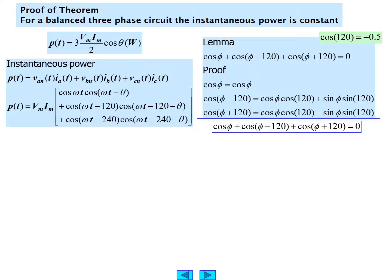For instantaneous power, we know it's the product of voltage and current, so we can make a substitution now for what that represents. The amplitudes V_m I_m can be factored out, and we end up with this three-term solution that we've just seen: cosine omega t times cosine omega t minus theta for one phase, plus cosine omega t minus 120 times cosine omega t minus 120 minus theta for the second phase, and cosine omega t minus 240 times cosine omega t minus 240 minus theta for the third phase. Another trigonometric identity would be cosine alpha cosine beta equals one-half of cosine alpha minus beta plus cosine alpha plus beta.